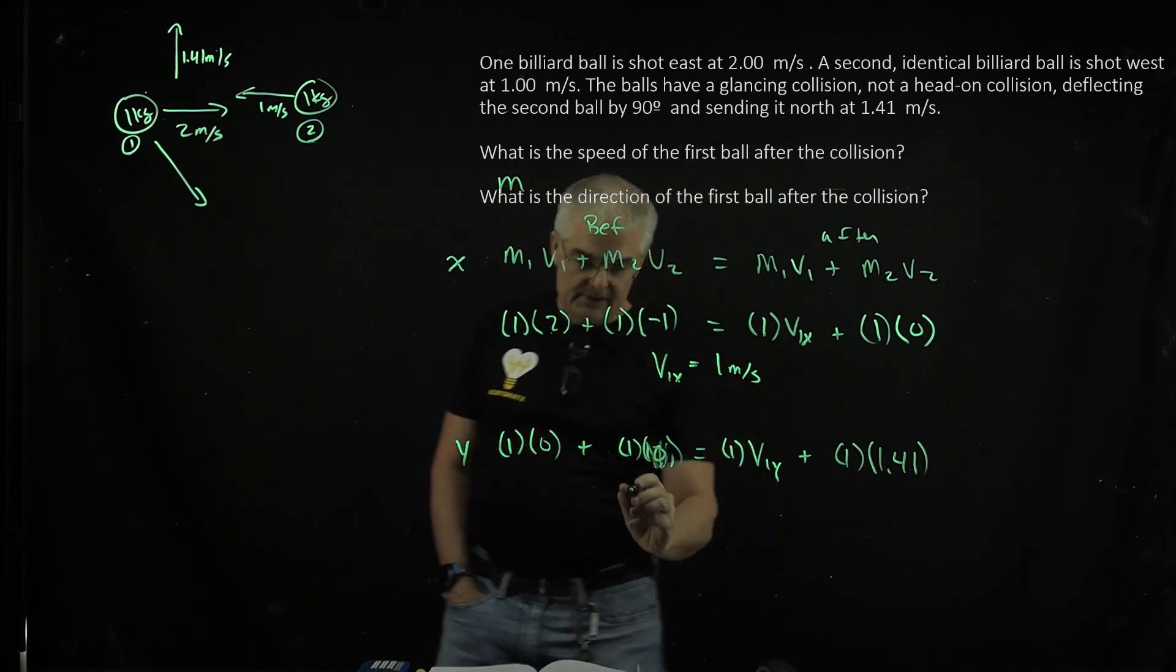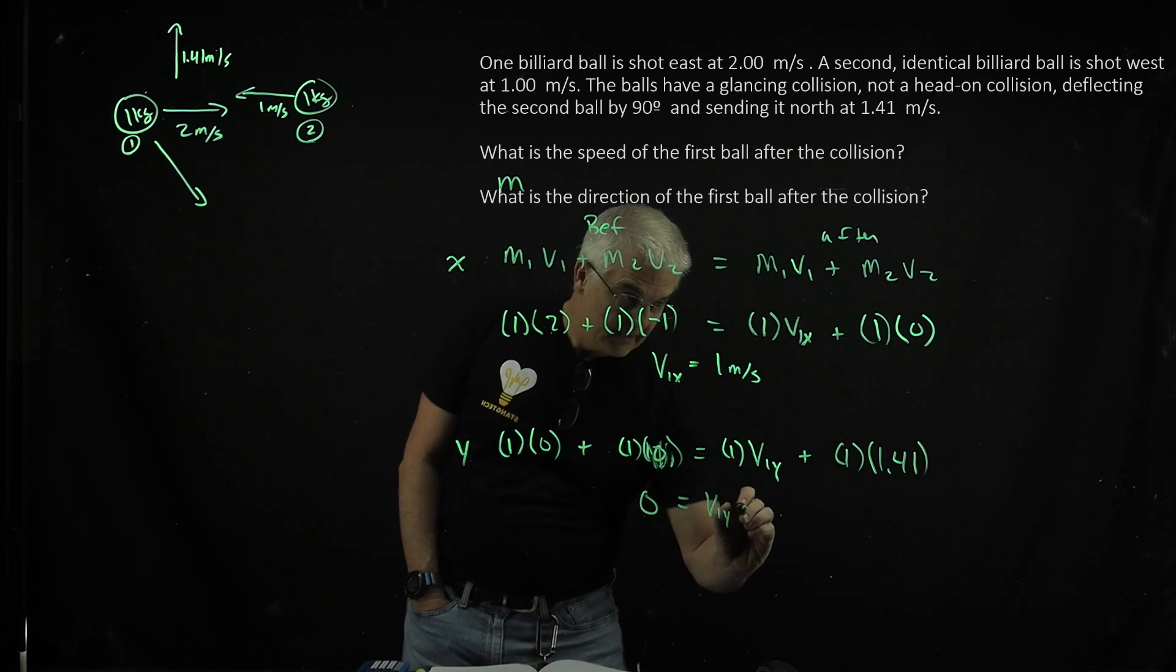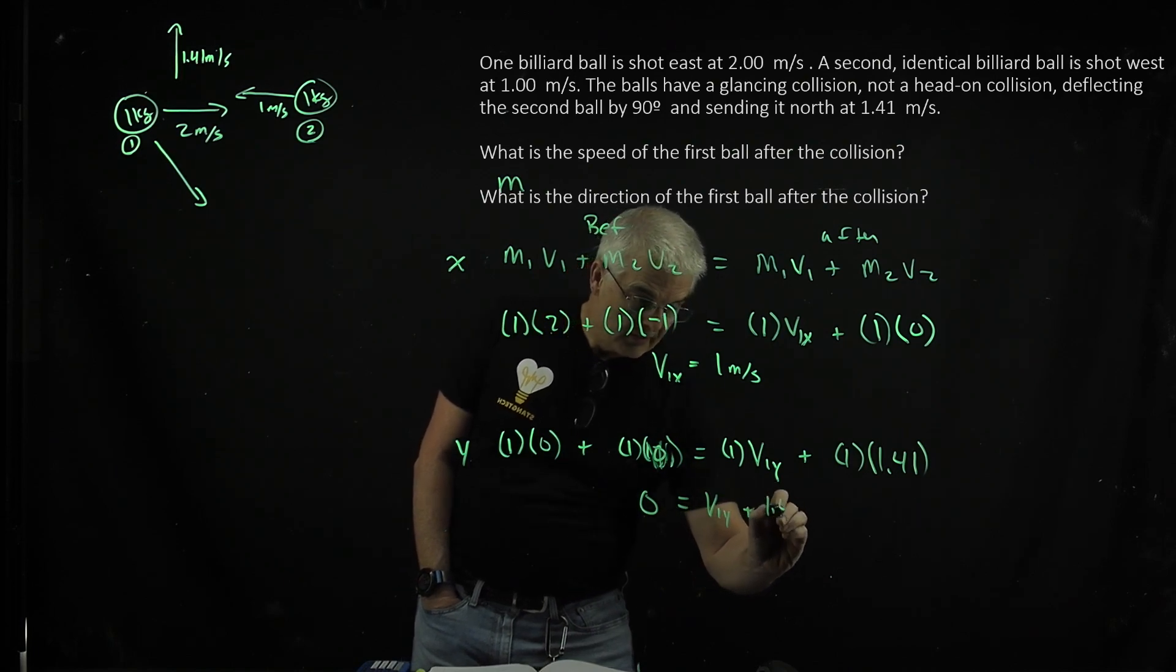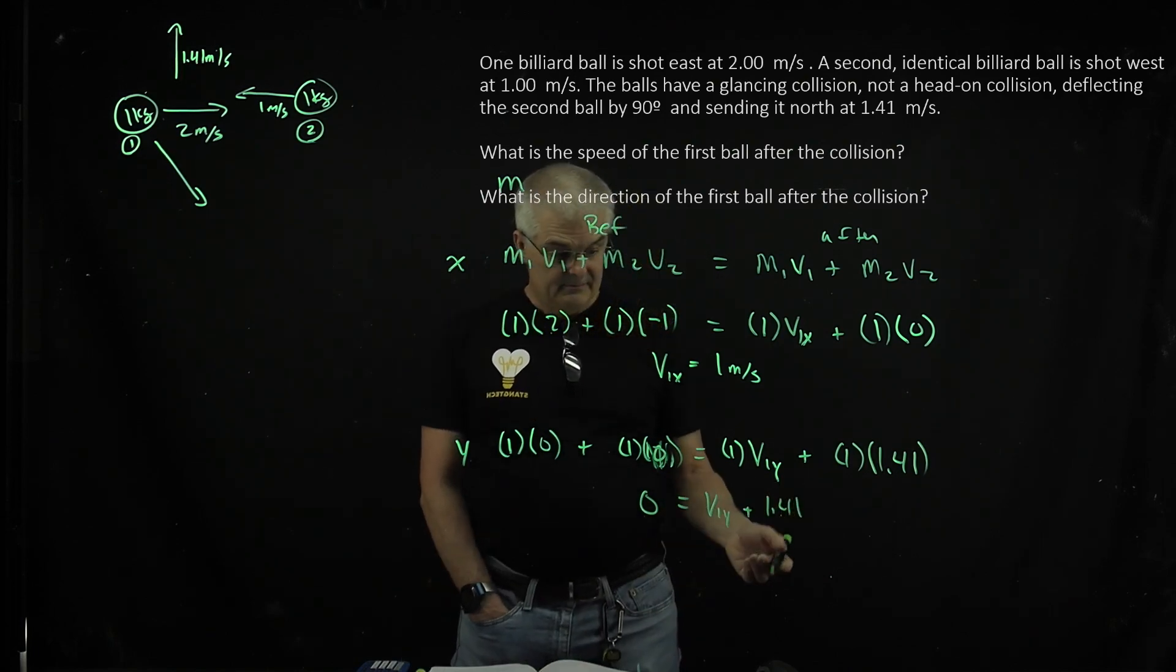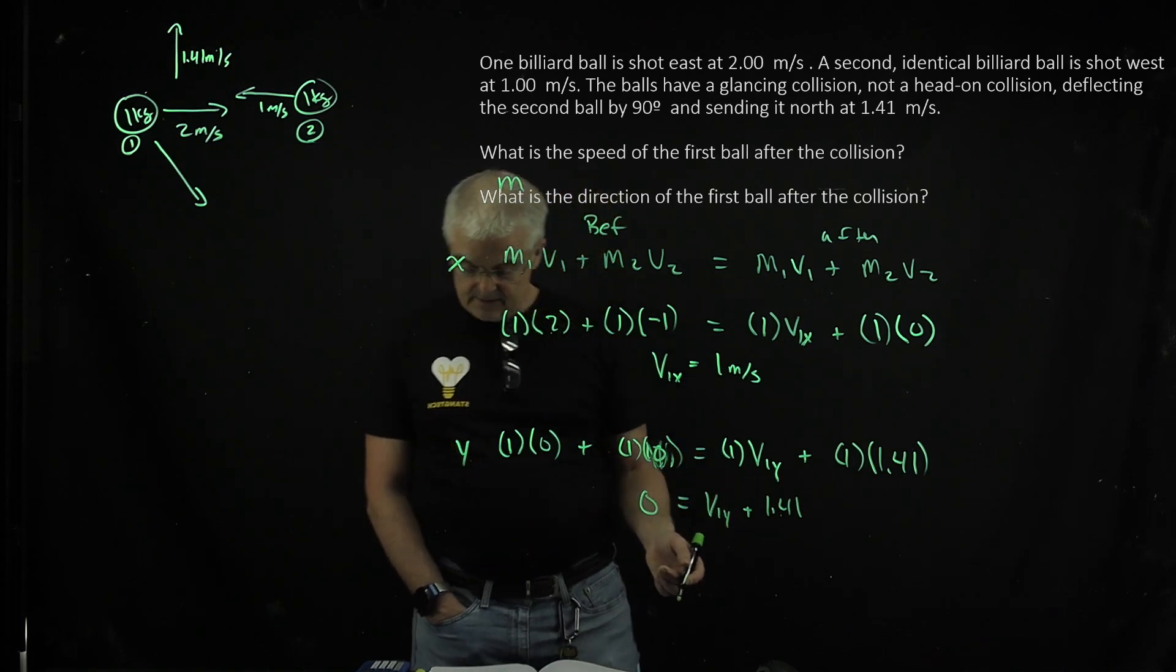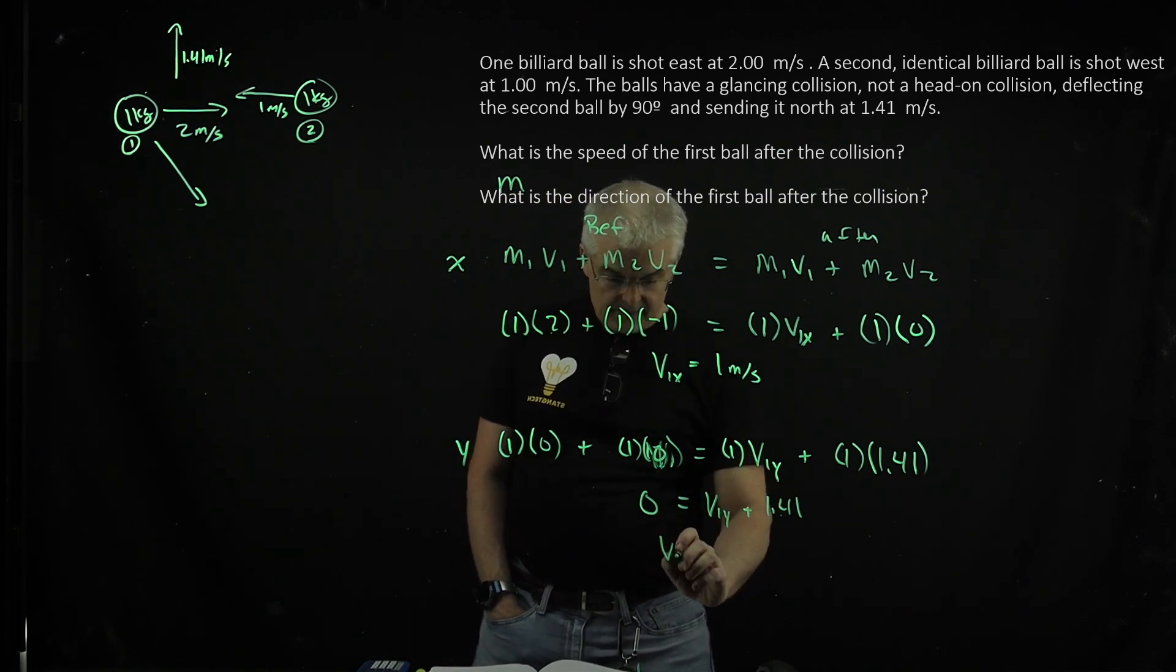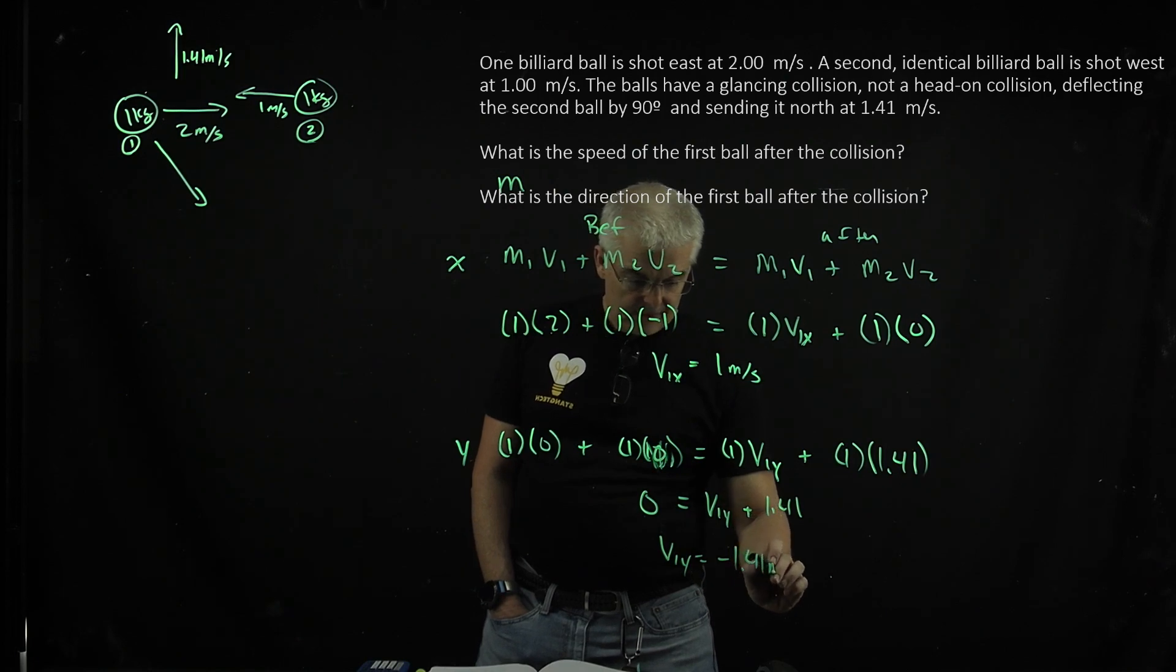I basically have 0 equals v1y plus 1.41, right? So, what is v1y? v1y equals negative 1.41 meters per second.